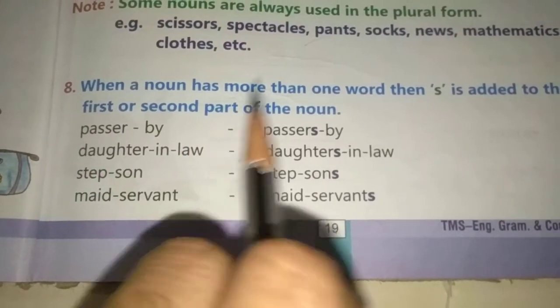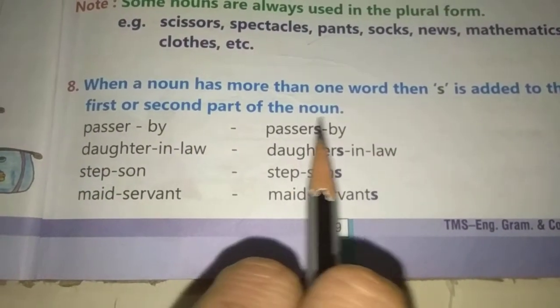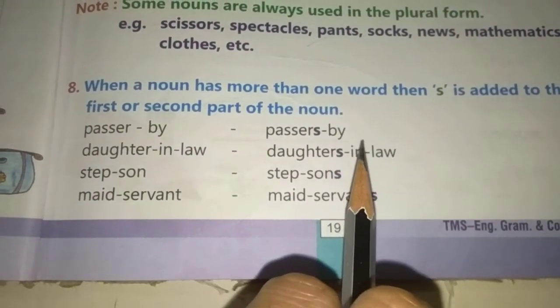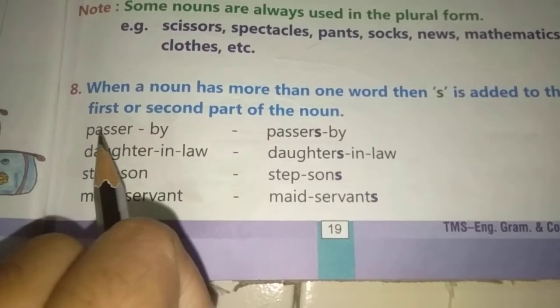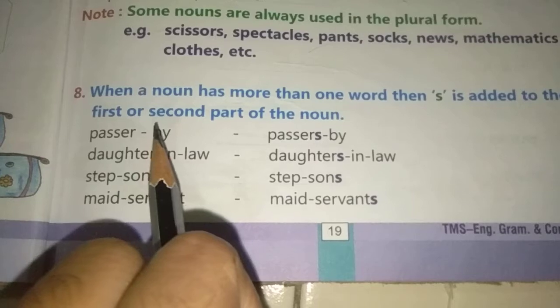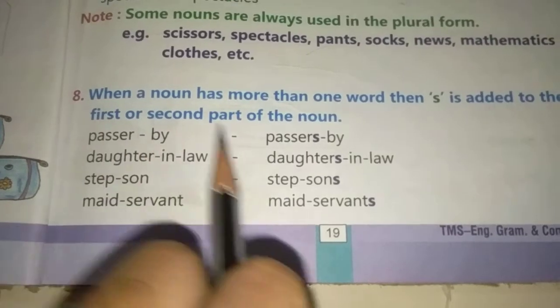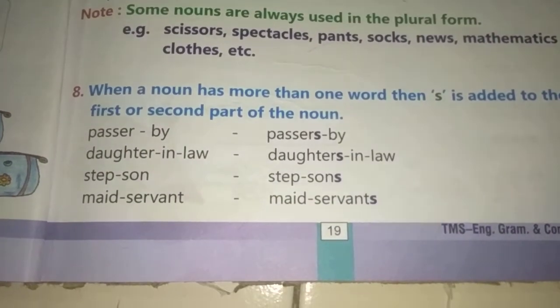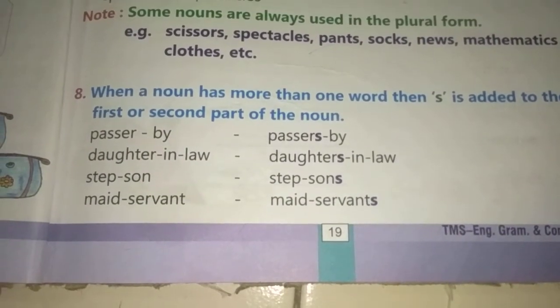Passer-by, Passers-by. Bacho, 'passer' miss hota hai, rahagir. (Children, the word 'passer' is what gets the S — meaning passer-by/passerby.)